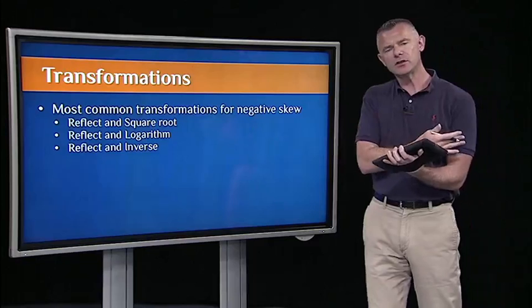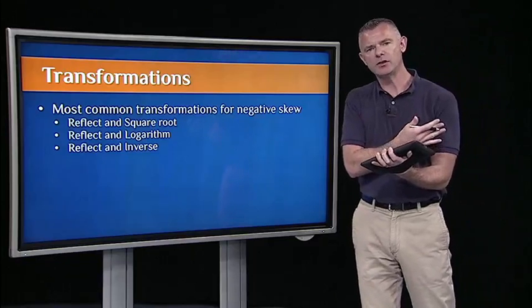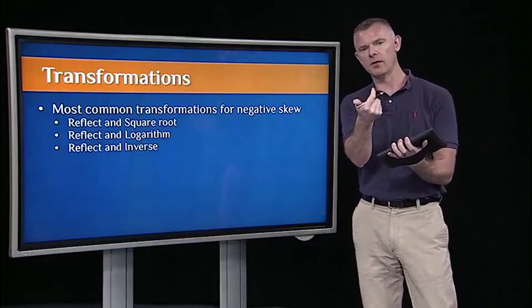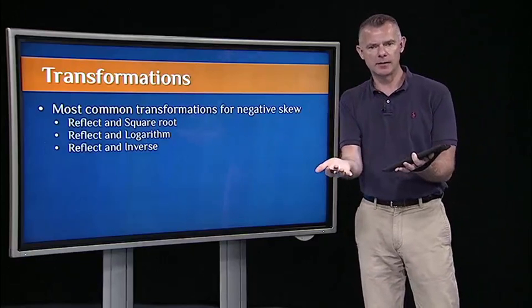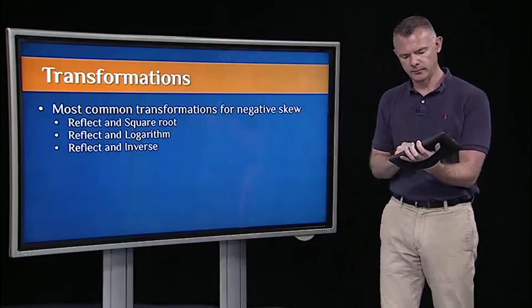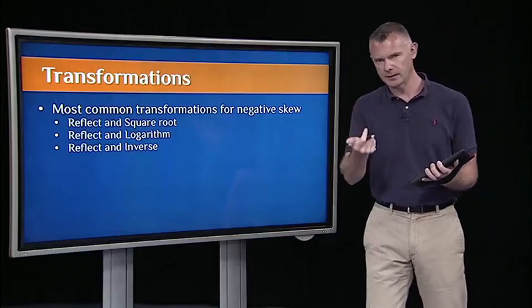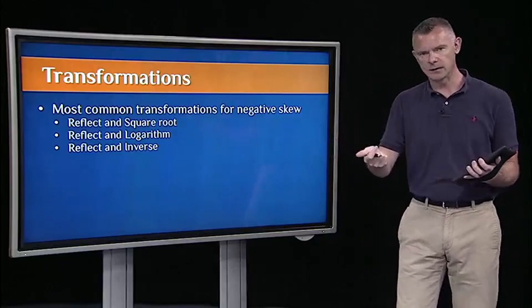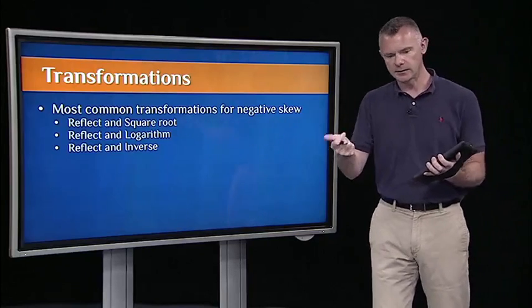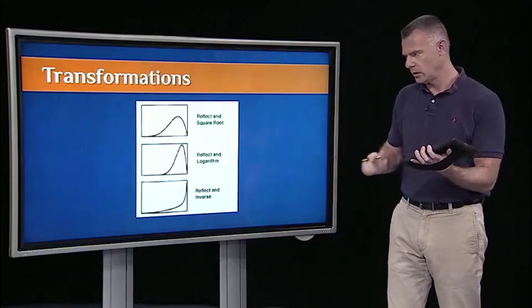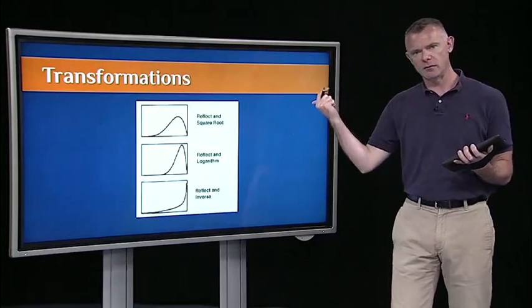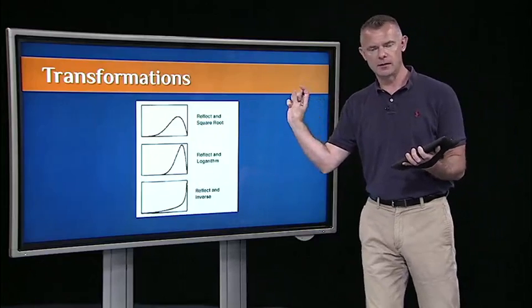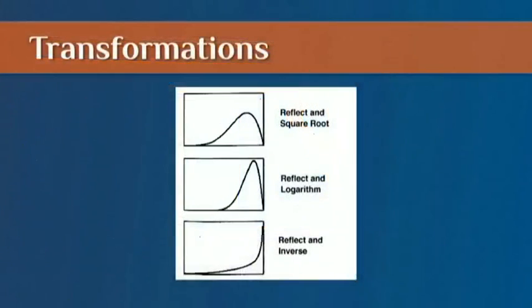If we have negatively skewed distributions, then all we have to do is reflect them, that is, take the inverse of all the values, and then apply the same transformation. We could reflect and take the square root, reflect and take a log, or reflect and take an inverse. You can see the picture is just everything reversed. We're going to reflect the distribution by taking the inverse, and then do one of these transformations.